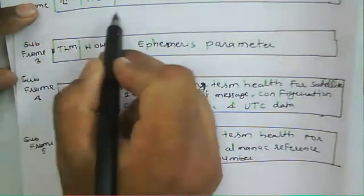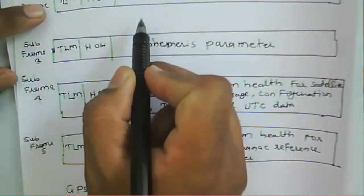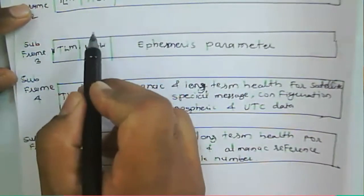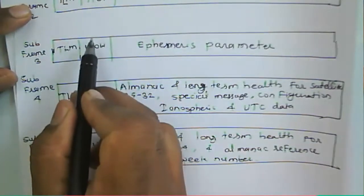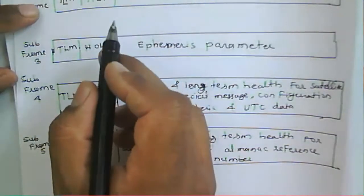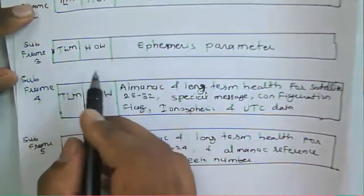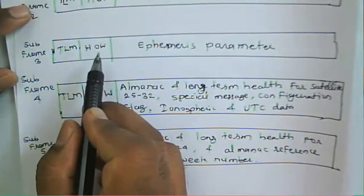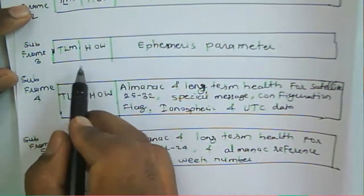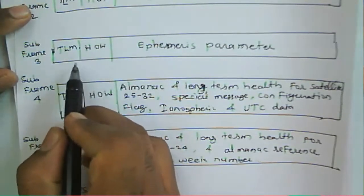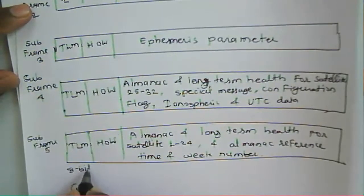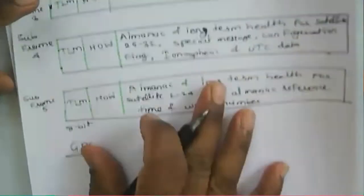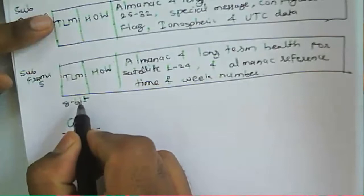We have the TLM and HOW word. The TLM data contains data regarding the satellite. The TLM word is about 8-bit data — it is 8 bits — and that provides the preamble for synchronization.